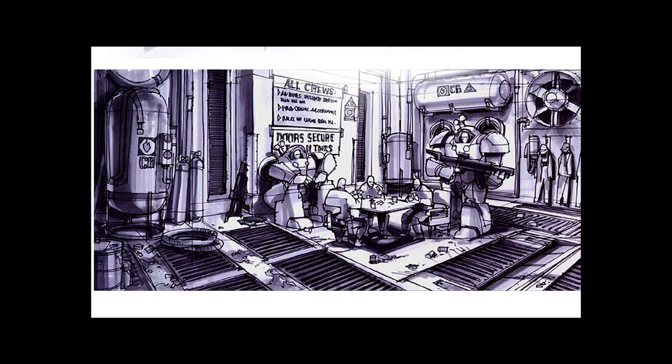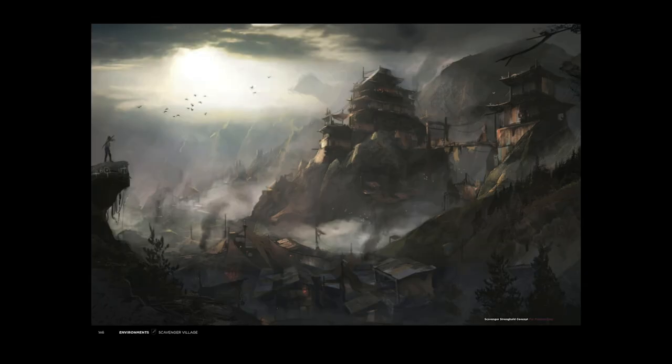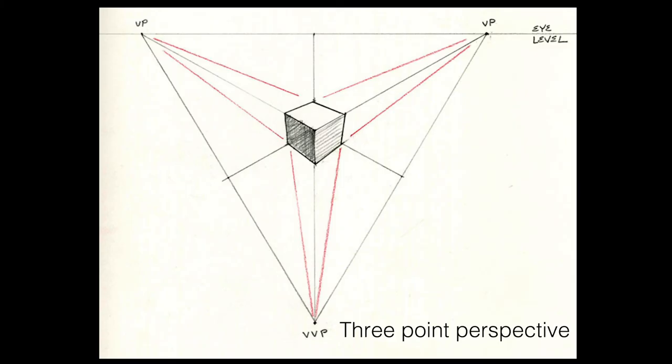Here's a two-point perspective drawing where the lines converge to two different vanishing points — one to the left and one to the right. This is what you see when looking at something at an angle. There's also three-point perspective, with three vanishing points — used when looking down at something at an extreme angle or looking up at an extreme angle, creating an extra vanishing point far below or far above where lines also converge.